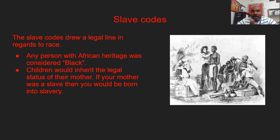In regards to legal status as free or slave, children would inherit the legal status of their mother. If your mother was a slave, then you would be born into slavery. So if a free slave owner had a relationship with a woman who was a slave and they had a child, that child's legal status was slave. However, if a Black enslaved man had a child with a free white woman, that child would not inherit slave status. The laws prohibited interracial relationships, especially between Black men and free white women.